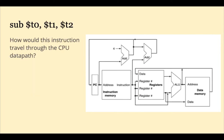The term data path refers to the path that information takes flowing through the CPU. Here we're looking at an abstraction of the CPU, abstracting away from the millions of transistors in different parts of the CPU.